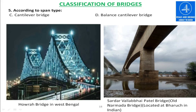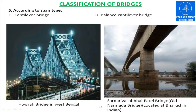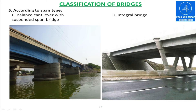This is the balanced cantilever bridge, known as the Sardar Vallabhbhai Patel Bridge and also the Old Narmada Bridge, located in Bharuch, Gujarat. This is the balanced cantilever with suspended span — where one span is suspended at the middle. And this is the integral bridge, where the abutment and pier are integrated with the deck.